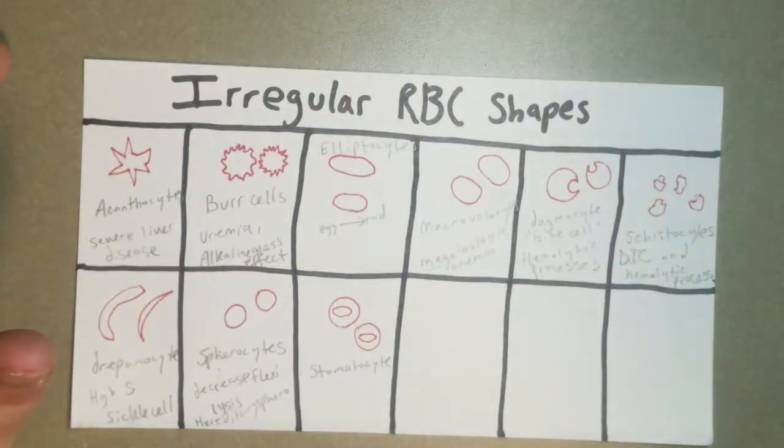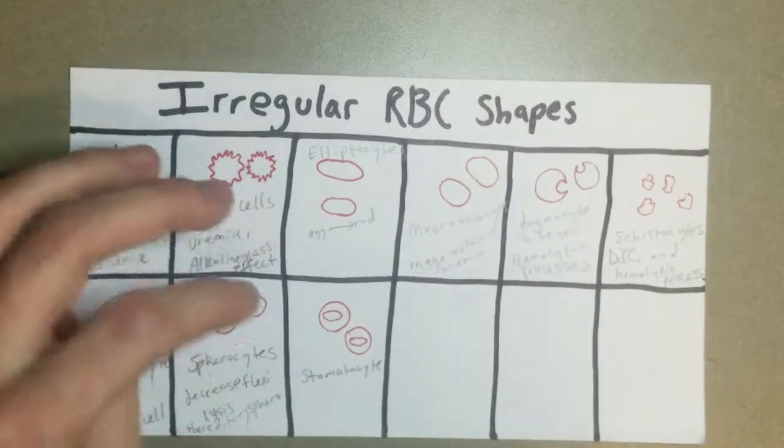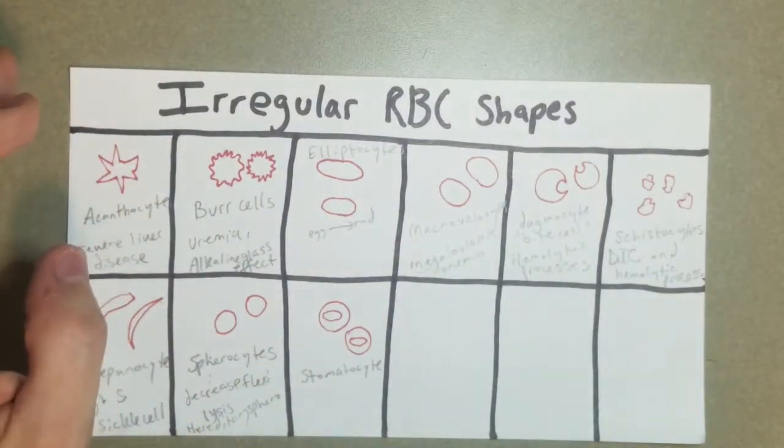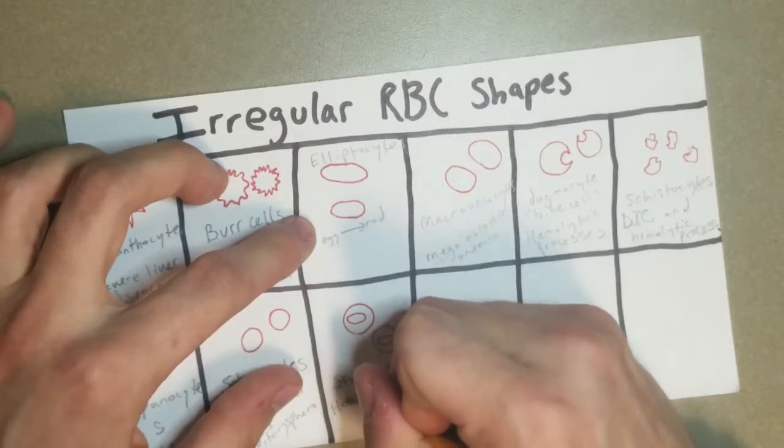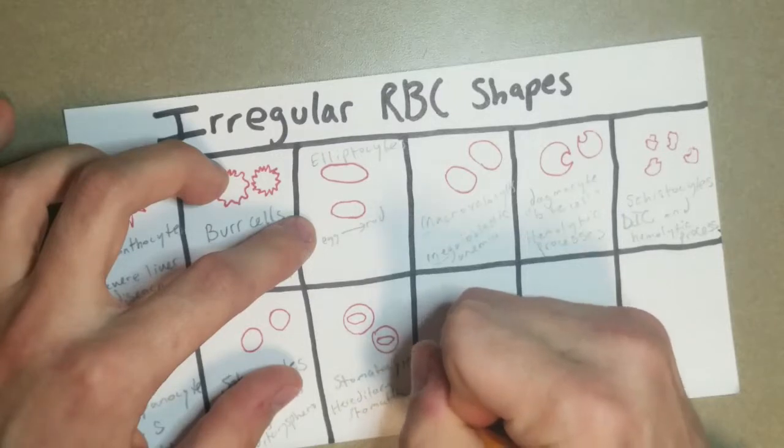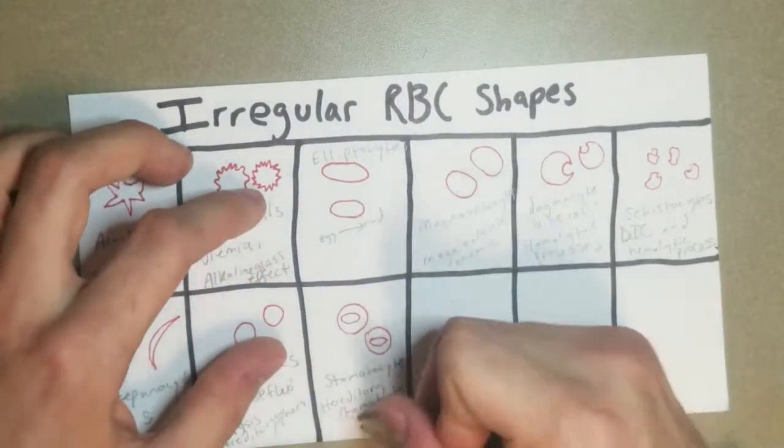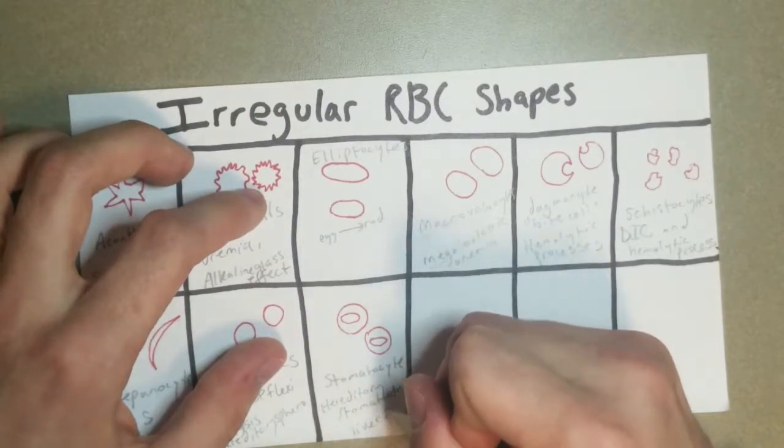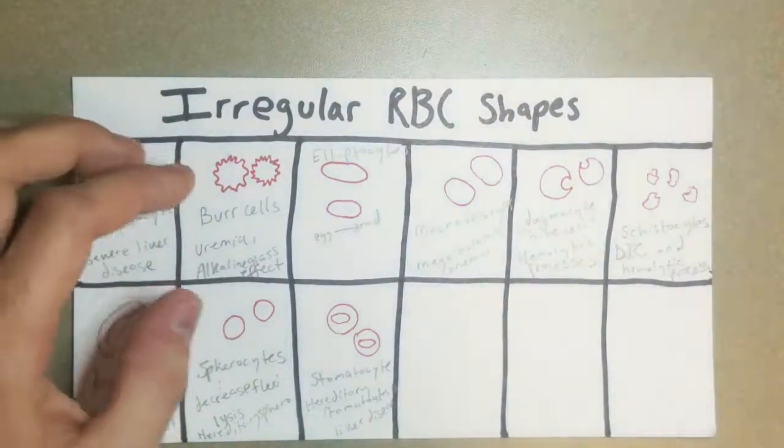This has all those issues with lysis. And particularly in stomatocytes, they can be hereditary stomatocytes. Hereditary stomatocytosis. That's a tough one. And also liver disease is a common one. Common cause of that. They can be congenital or acquired.